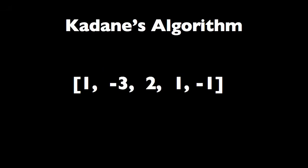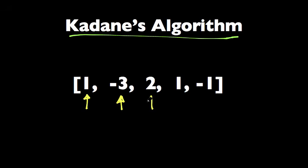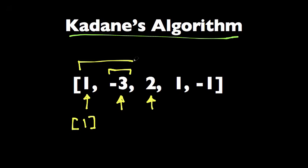The optimal solution to this problem is what's called Kadane's algorithm. I'm going to explain the idea behind it first, and then we're going to go into the actual algorithm. The idea is very simple: we're going to look at each index and ask ourselves, what's the maximum subarray ending at this index? For the first index, the maximum subarray ending at that index is obviously just 1. For the second index, it could be either 1, negative 3, or just negative 3, and the maximum one is 1, negative 3.